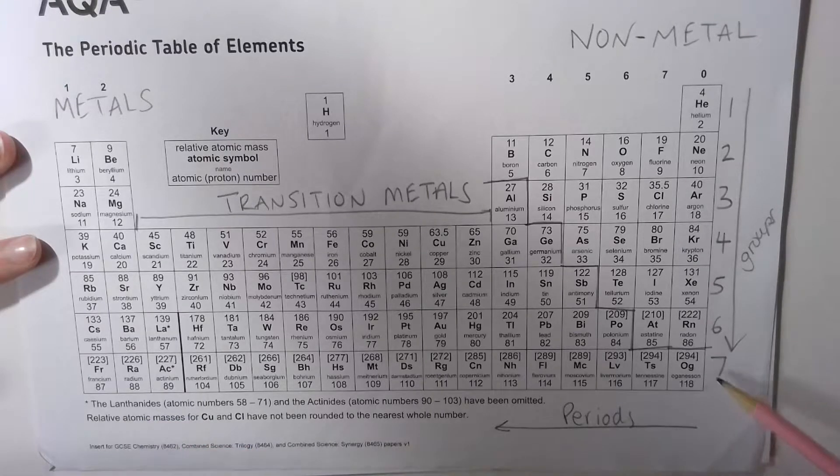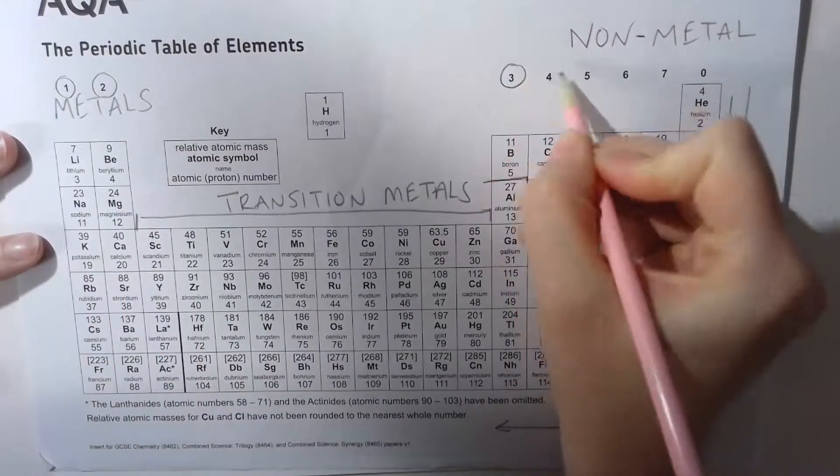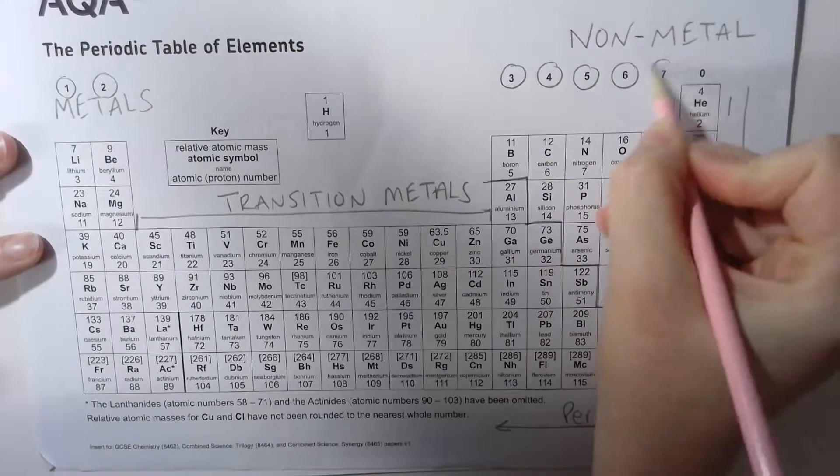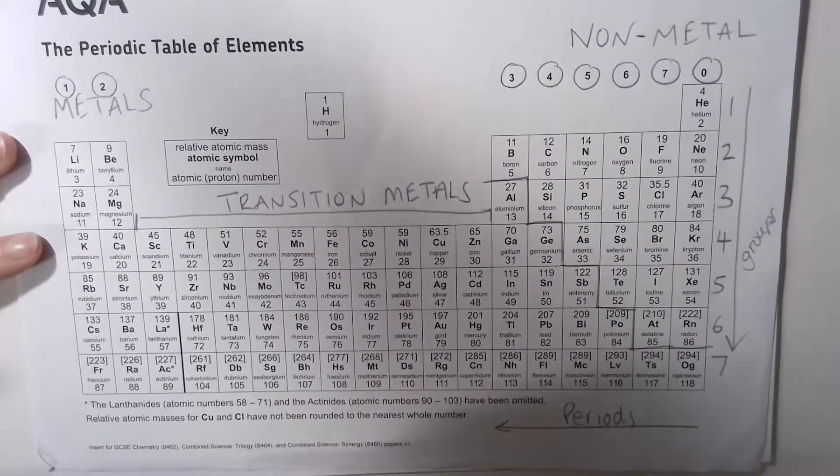The group number will tell us how many electrons they have on their outer shell. For example, everything in group one has one electron on its outside shell.